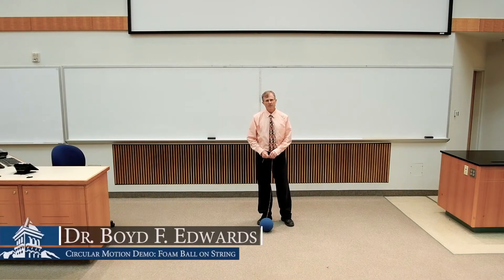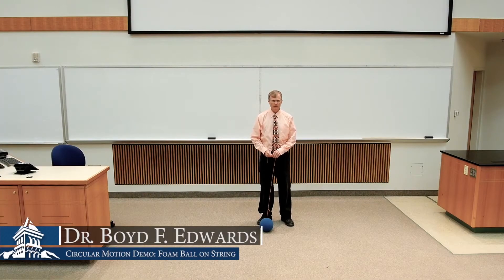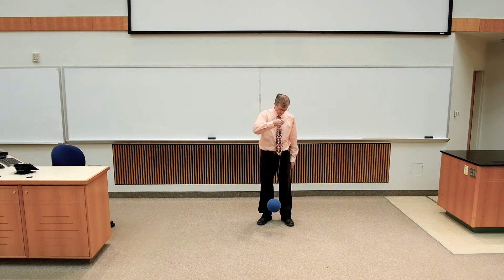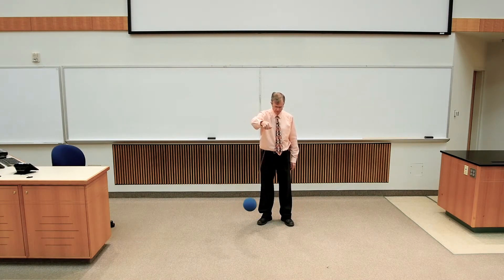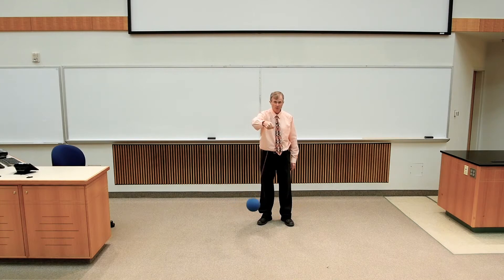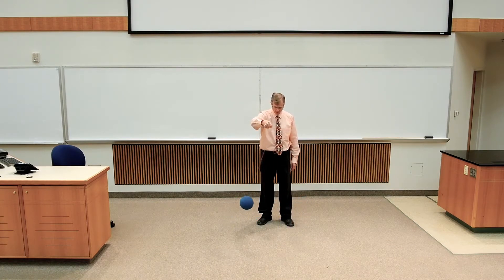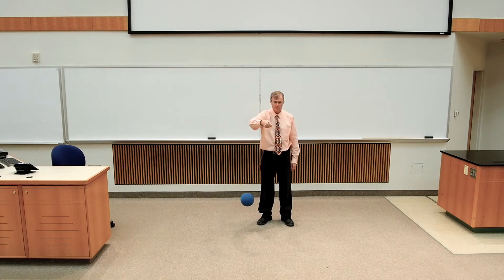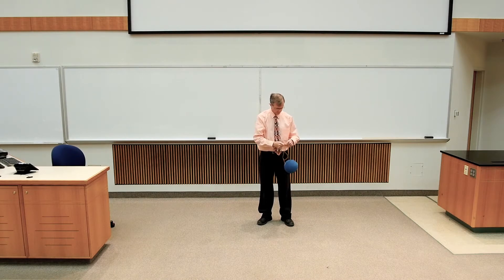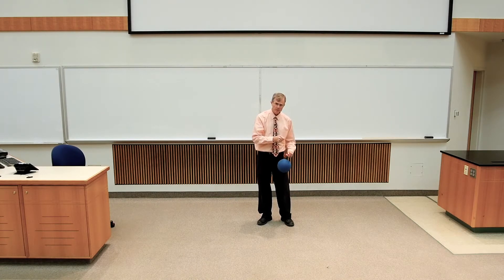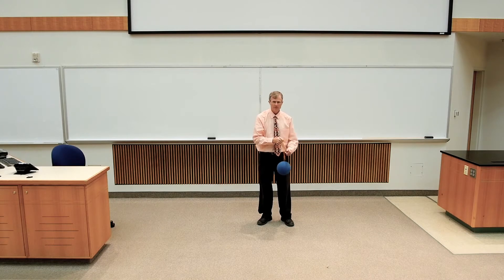This is a demonstration of uniform circular motion. Uniform circular motion is when an object moves in a circle at a constant speed. You may notice that although the speed is constant, the velocity is not. The velocity is a measure of both the speed, the amount, how fast it's moving, as well as the direction.